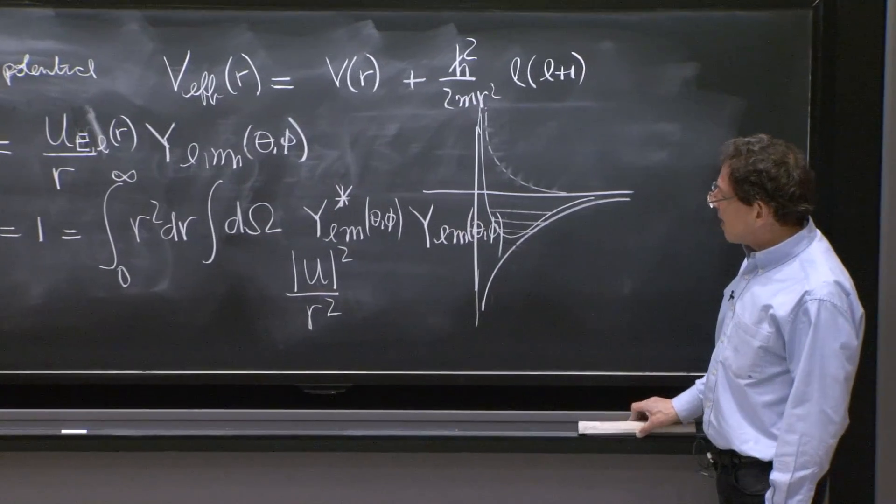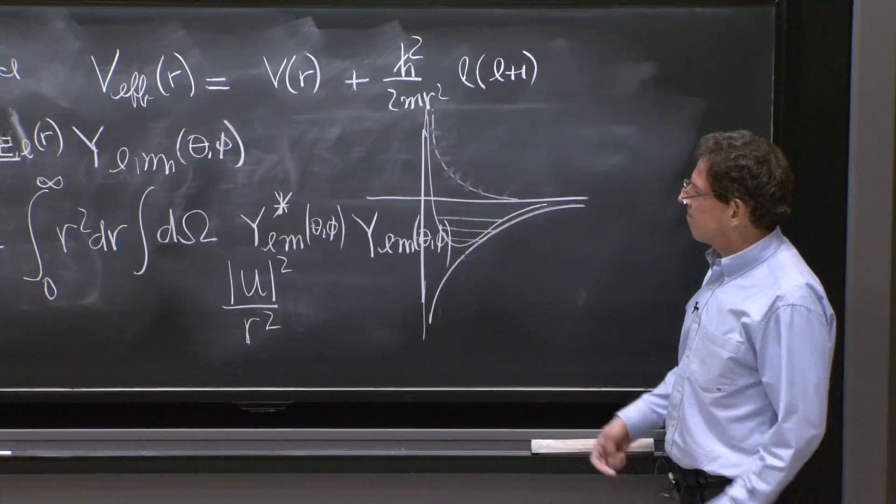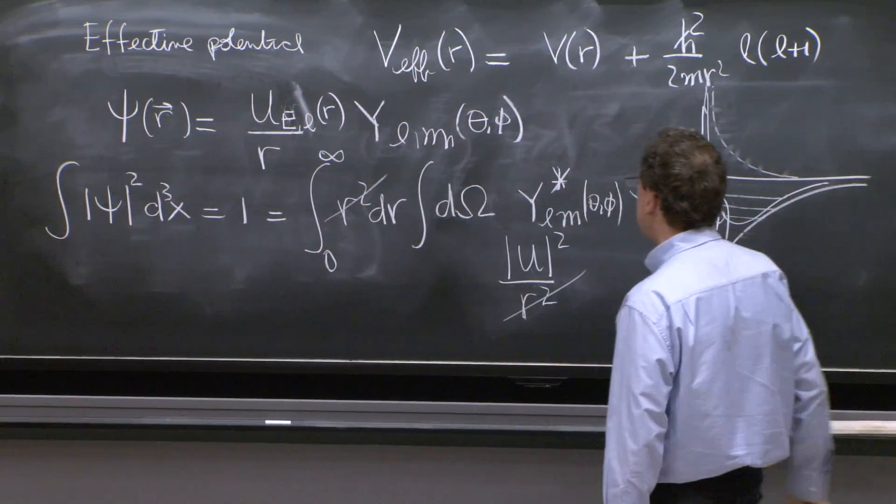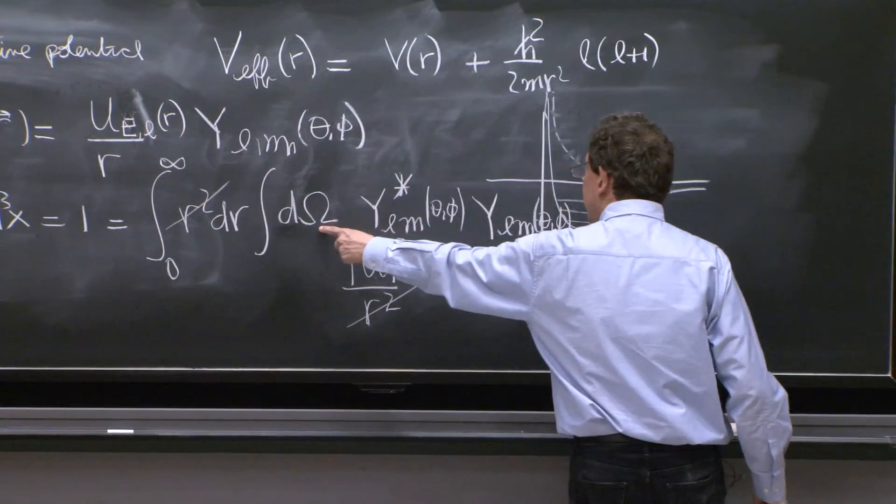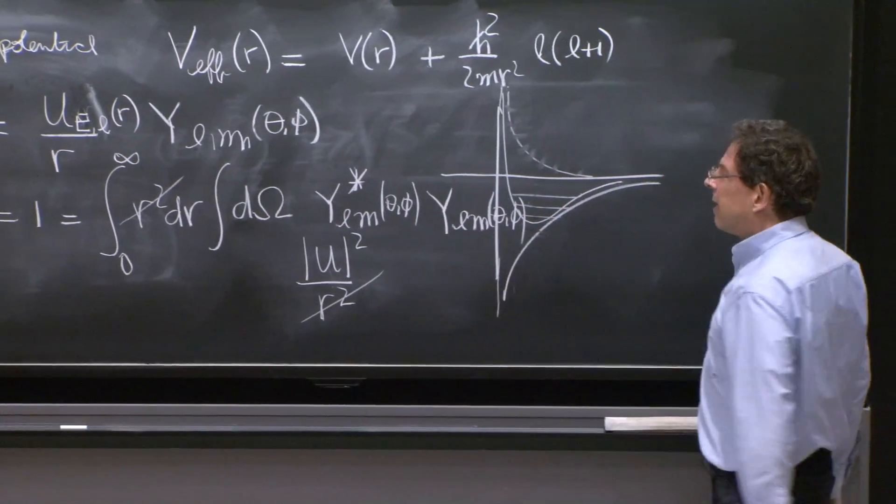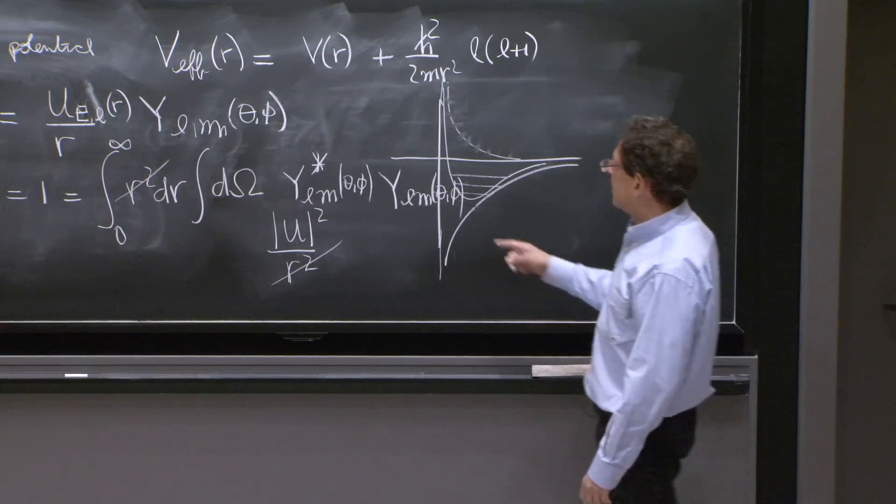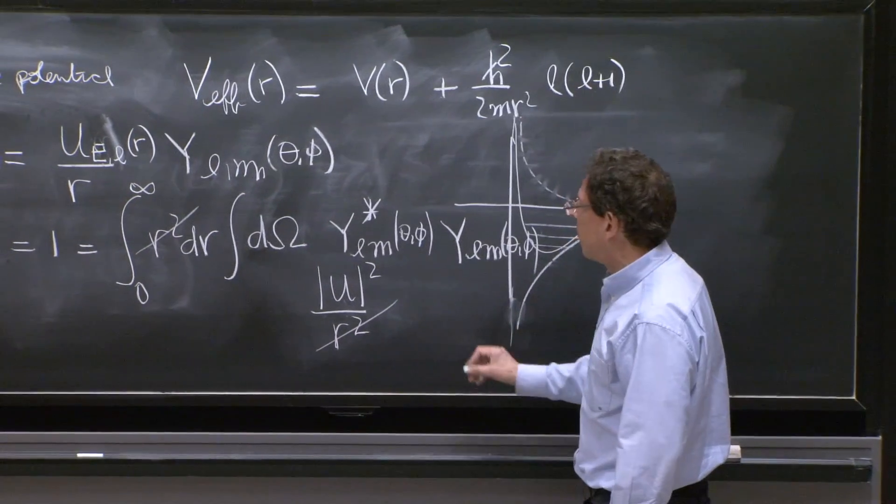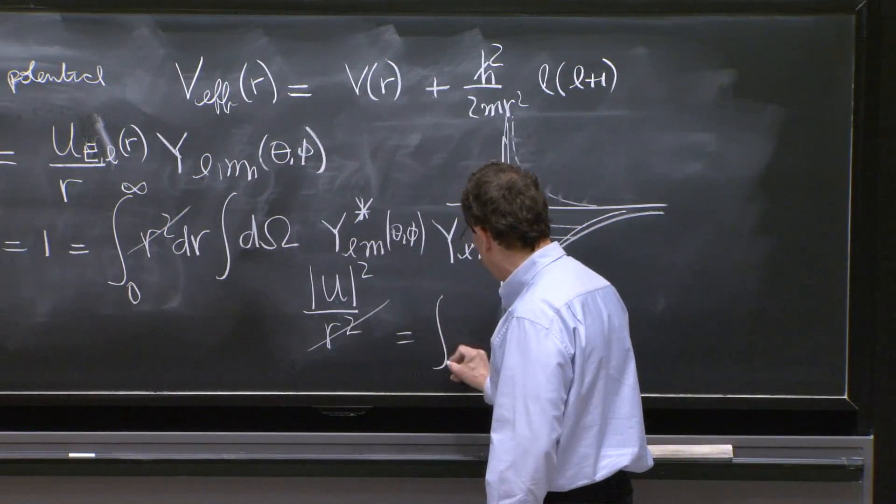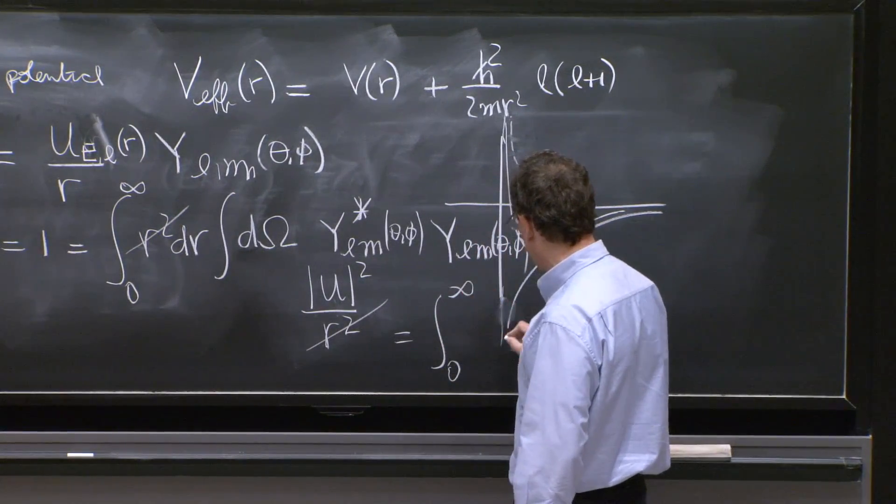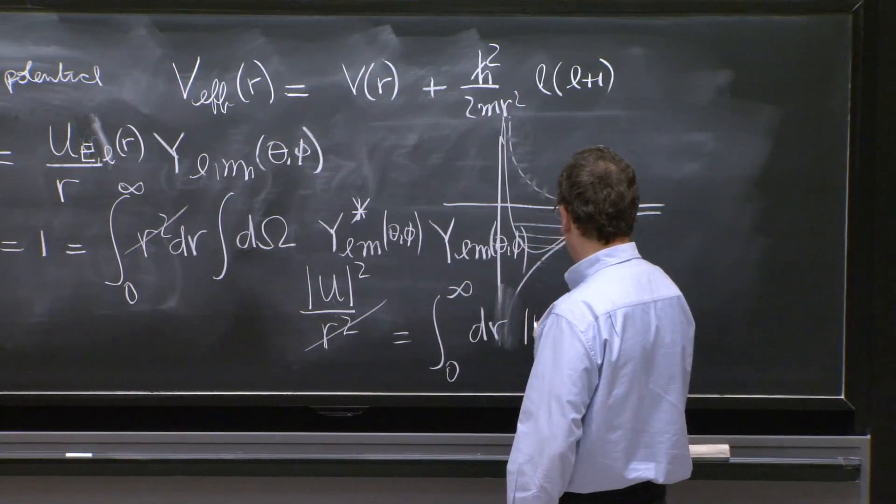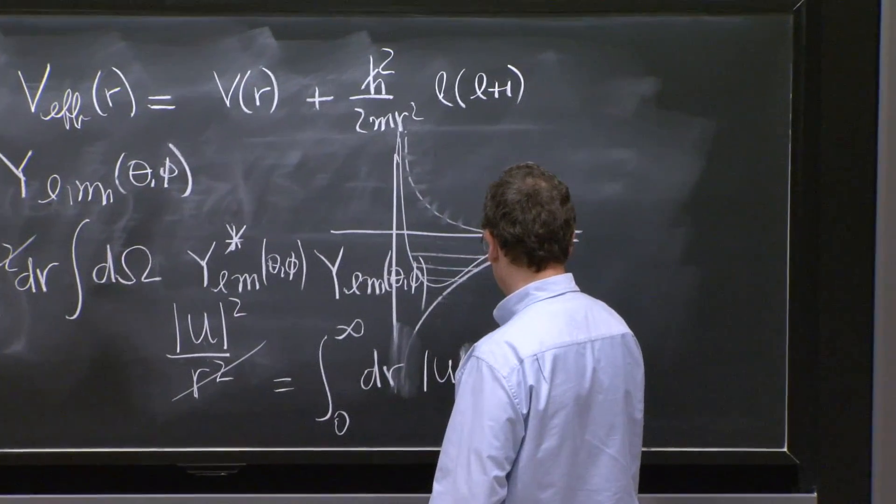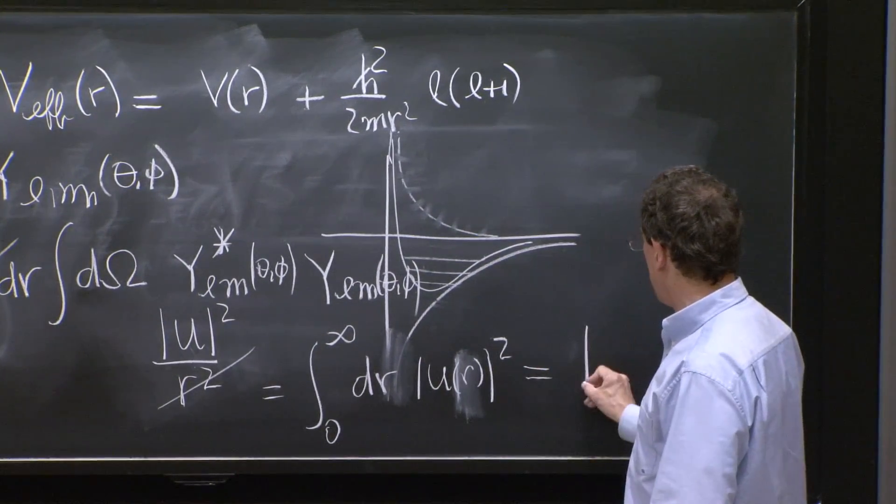Now what happens is just good stuff. r² cancels. And this solid angle integral is a perfect integral for our normalization. So this gives you 1. And therefore, the end result for all this integral is just the integral from 0 to infinity of dr u(r)². And that must be equal to 1.